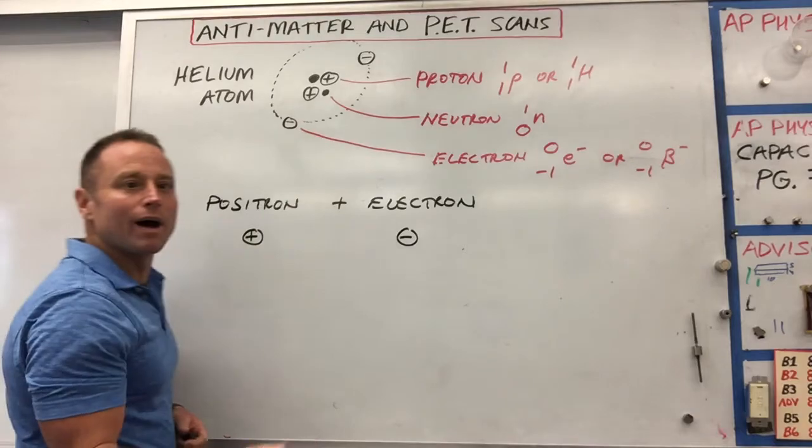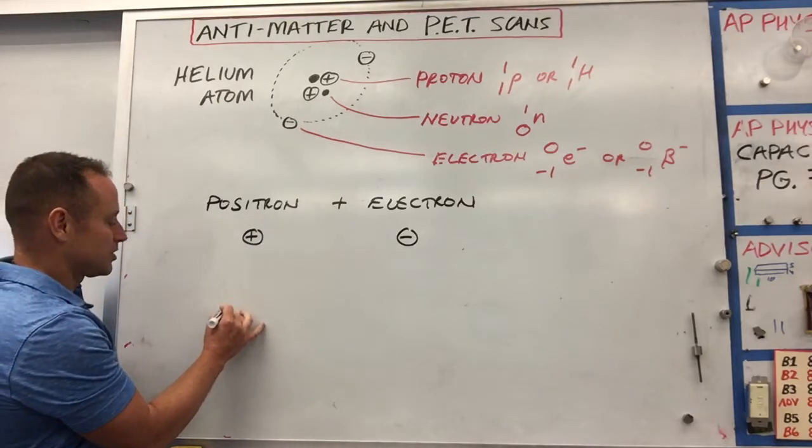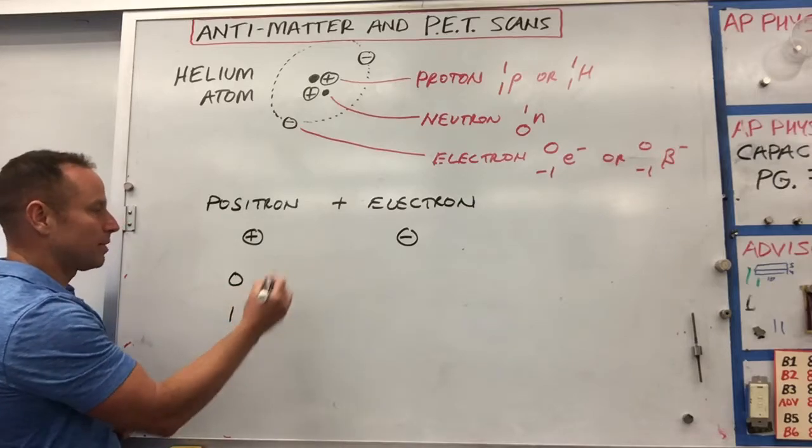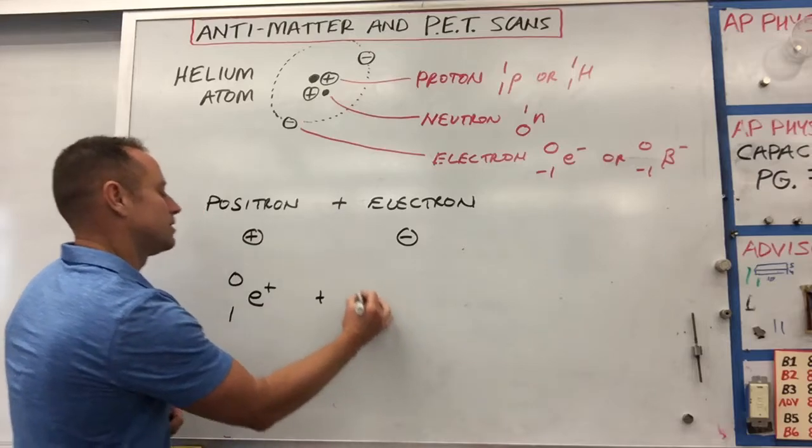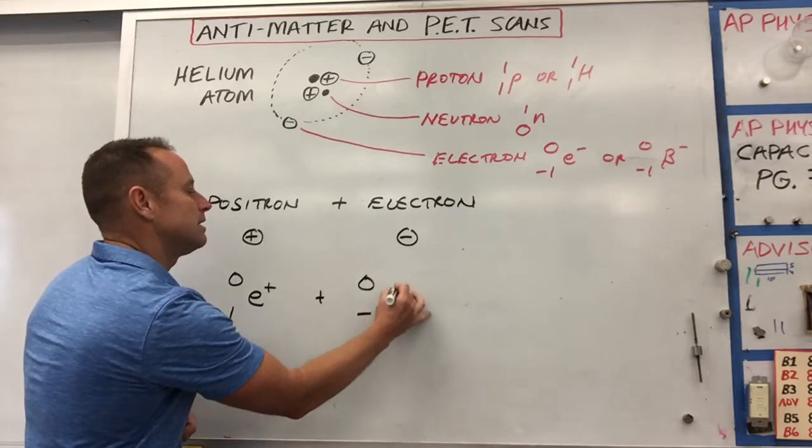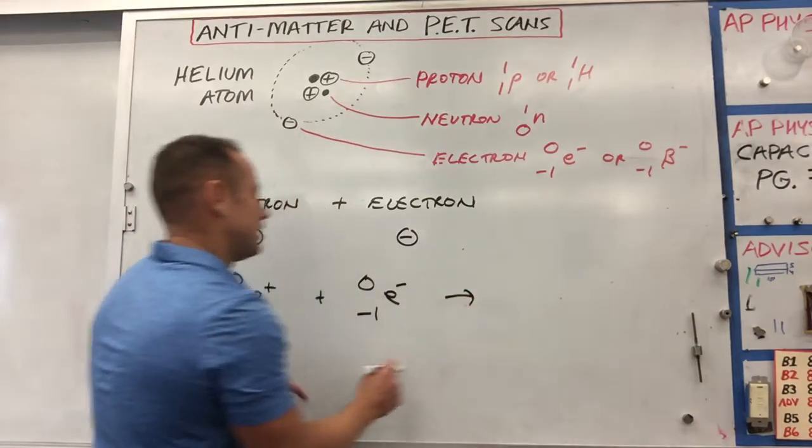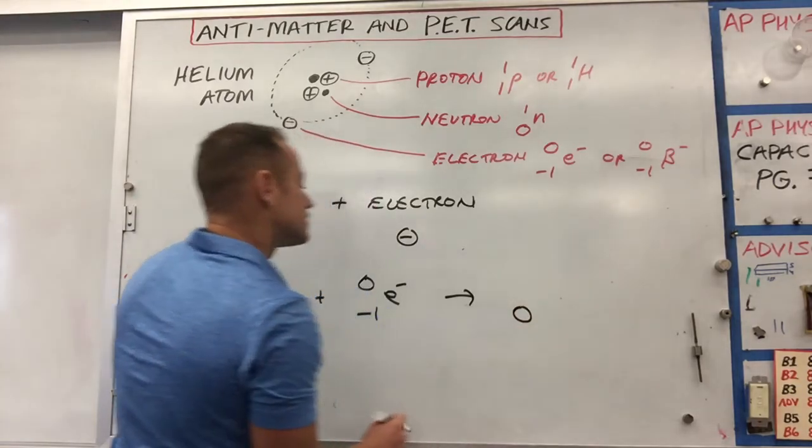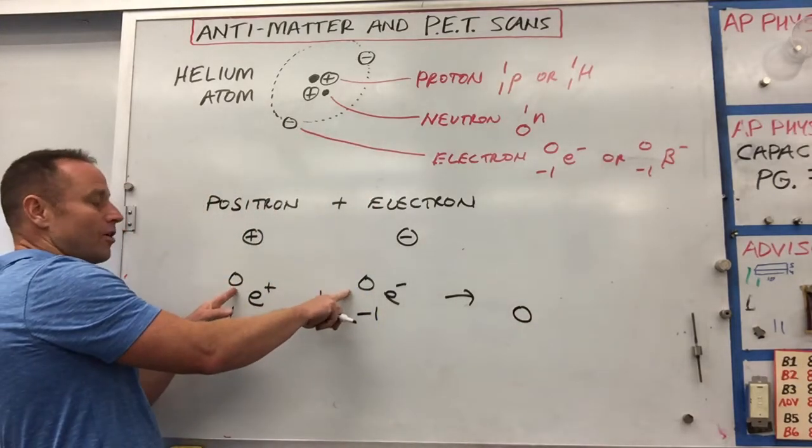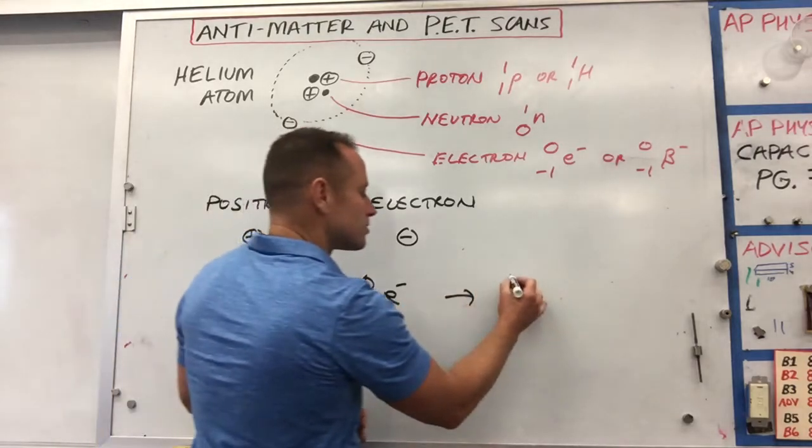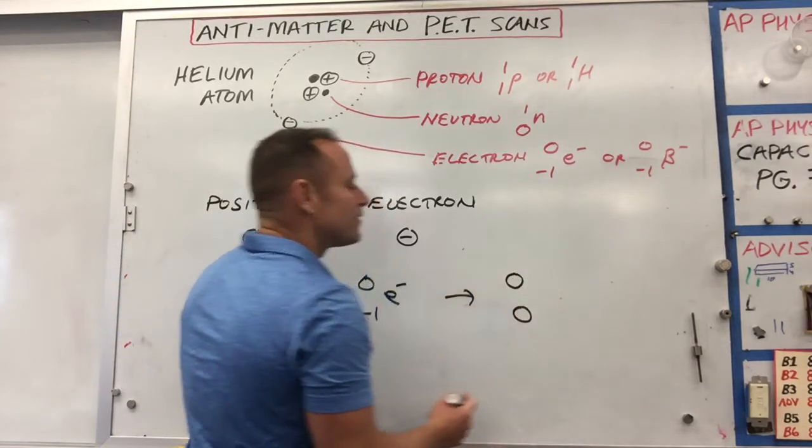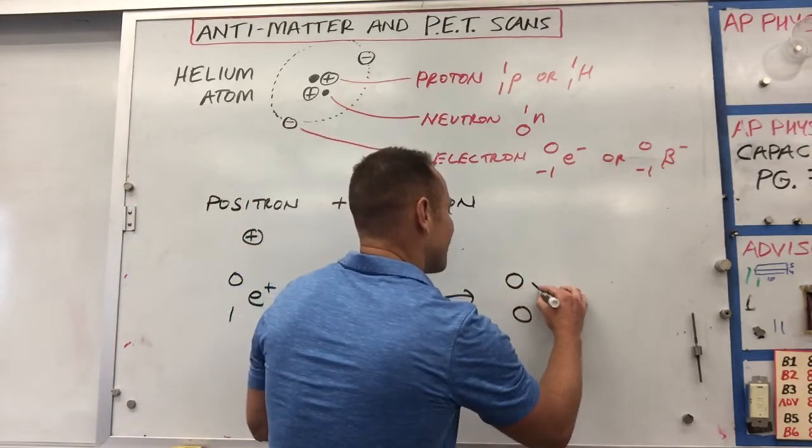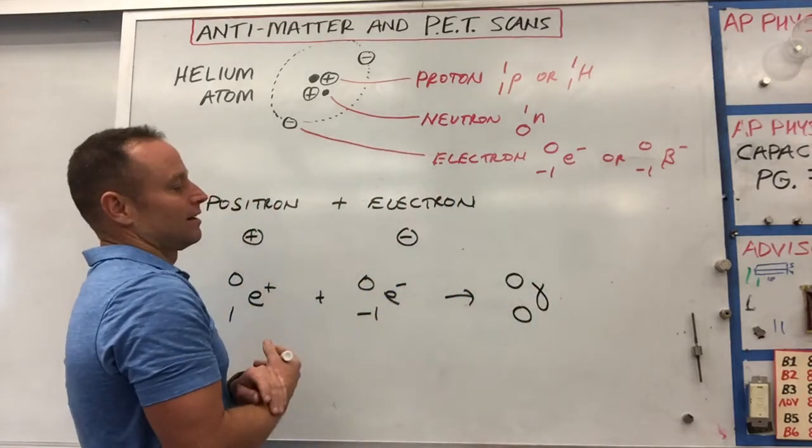And we'll write a little reaction for that. So the positron has a charge of plus one, mass number zero, E plus, or beta plus, plus the electron, which has negative one charge, zero, E minus, or beta minus. And again, what we've got here is a total charge of zero. So we've got to make something with a total charge of zero. And we don't have a mass number. We need something with a mass number of zero. So total charge zero, mass number zero. What fits the bill is actually a photon. But, so, those tend to be written with this symbol gamma for like a gamma ray.